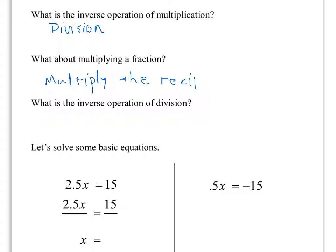Let's talk about why that works. Even if we have a whole number like 5 times x, if I think about 5 as a fraction — 5 over 1 — and I multiply by its reciprocal 1 over 5, thinking about this as one long fraction, 1 times 5 times x is 5x over 5 times 1 is 5. What did it really look like I did there? Looks like I divided. So we can see that multiplying by the reciprocal of a whole number is the same thing as dividing by that whole number.